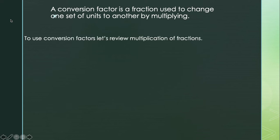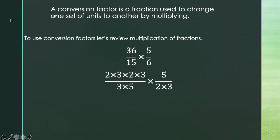To use conversion factors, we're going to first review multiplication of fractions. For example, if I want to multiply 36 over 15 times 5 over 6, what we're going to do first is break down the numerator and denominator into their prime factors. So 36 can be written as 6 times 6, which is 2 times 3 times 2 times 3, and 15 in the denominator can be written as 3 times 5. In the second fraction, 5 in the numerator is already prime, but the denominator 6 can be written as 2 times 3.